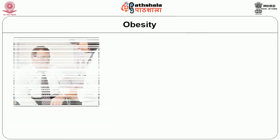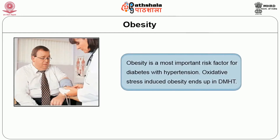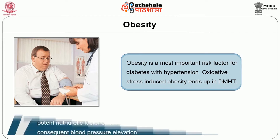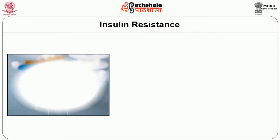The next risk factor is obesity. Obesity is the most important risk factor for diabetes with hypertension. Oxidative stress-induced obesity ends up in diabetes mellitus and hypertension. Increased energy intake is associated with elevated plasma insulin, which is a potent natriuretic factor causing increased renal sodium reabsorption and consequent blood pressure elevation.